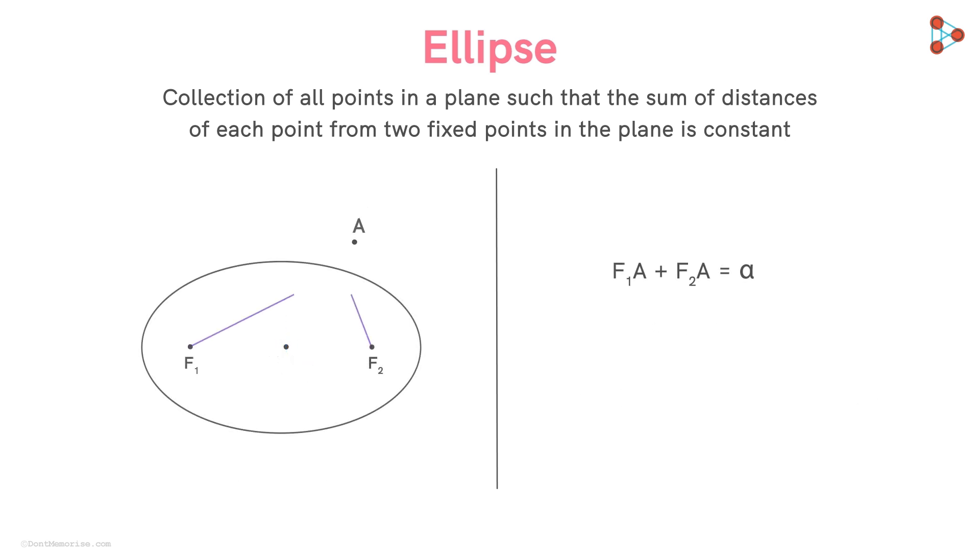So now we know that for an ellipse, we need to know two things. First is the two fixed points called the foci of the ellipse. And second, the constant sum of the distances of the points on the ellipse from these foci.